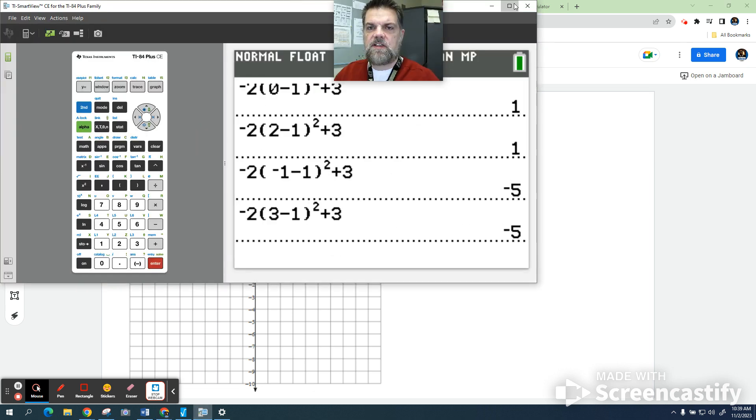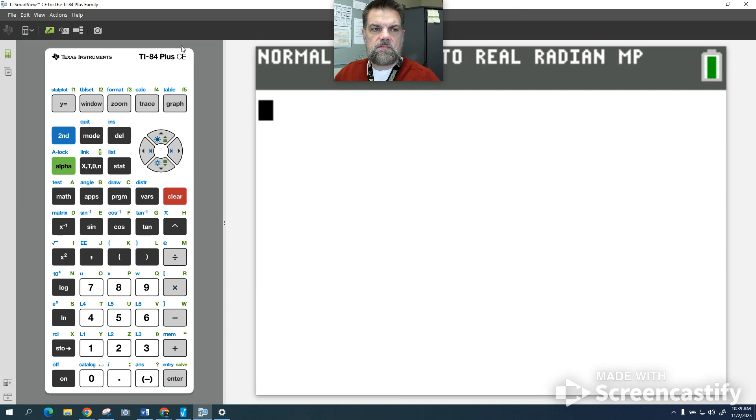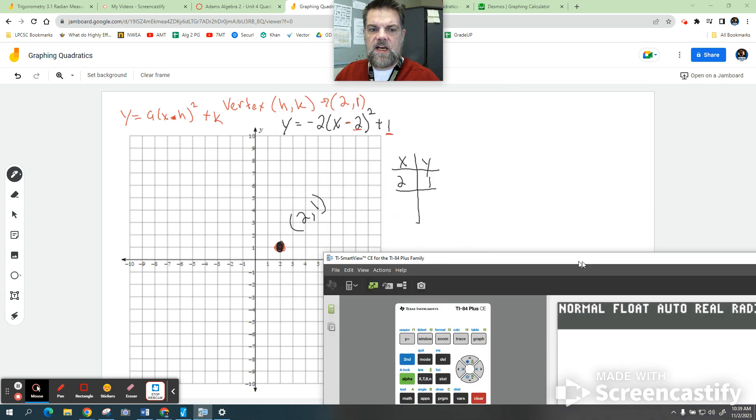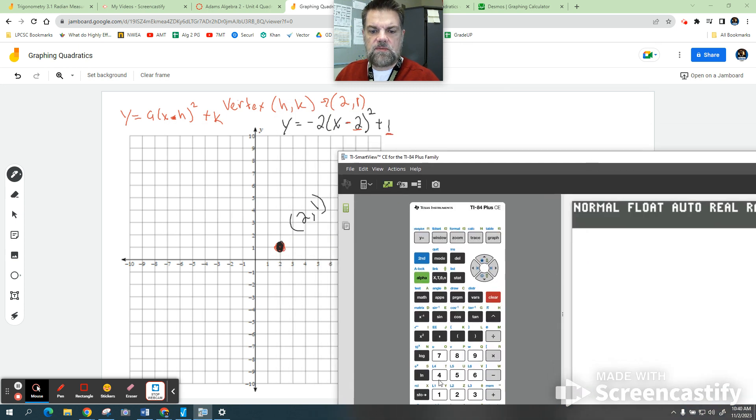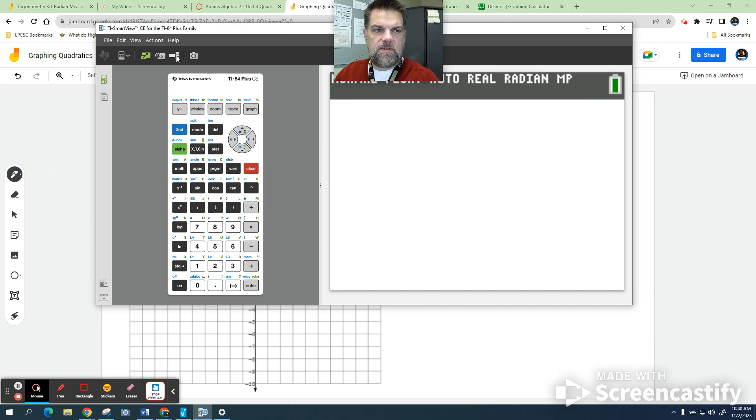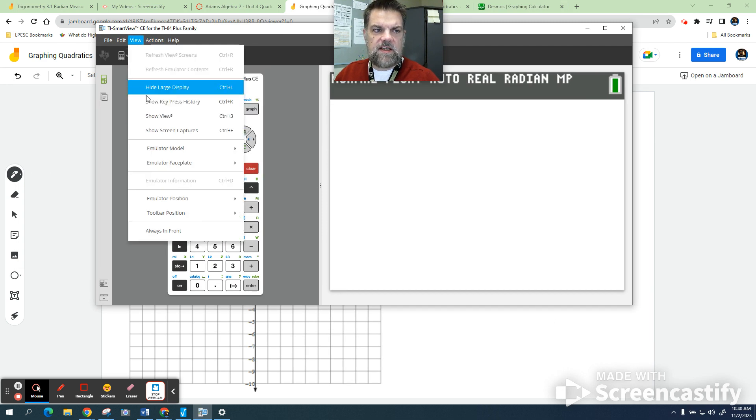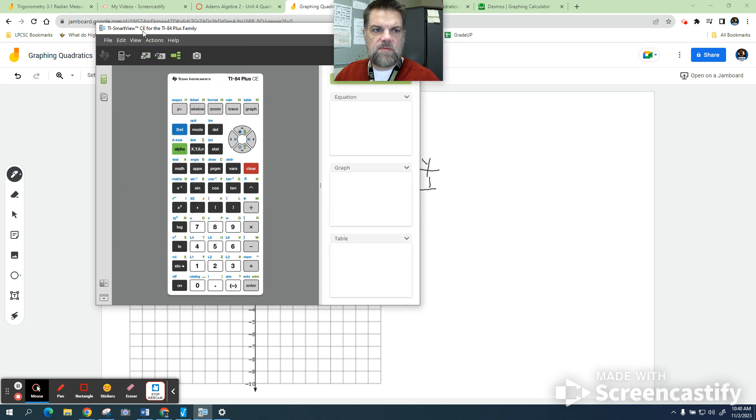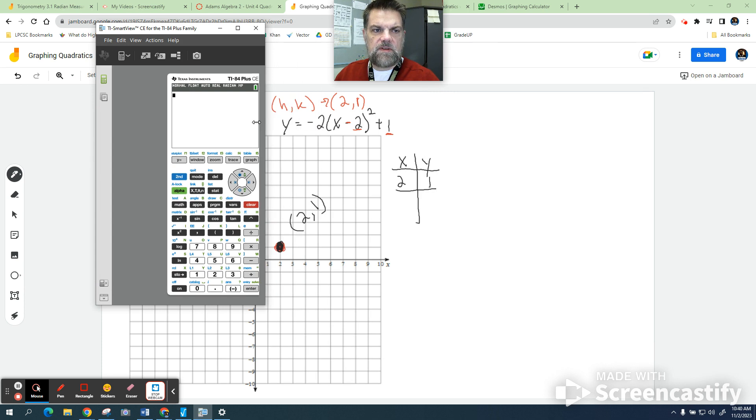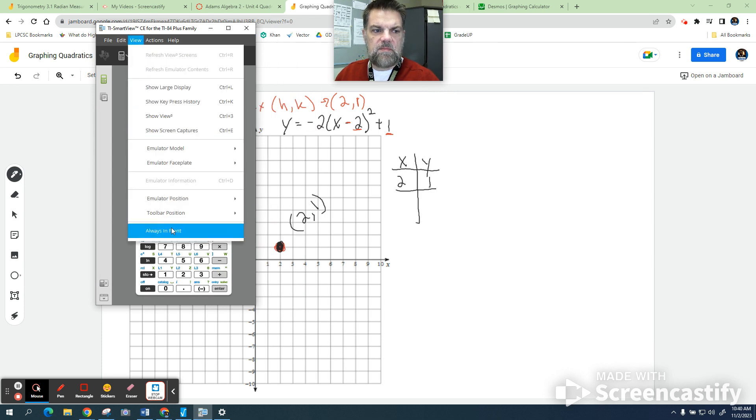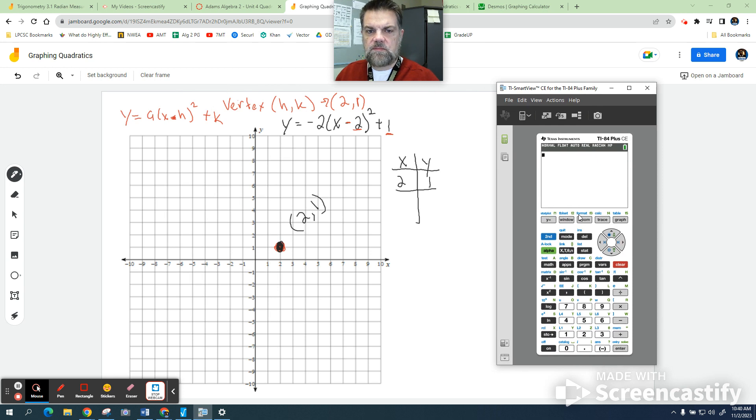Turn on your fancy calculator. All right. So my equation that I wrote down was negative 2. Here, let me do this little thing here, and then I'll make it big again in a second. So I'm going to put my little calculator here, and I'm going to say negative 2 times the quantity, but instead of x, I'm going to plug in 2, so I'm going to say 2 minus 2, close the parentheses, square it, plus 1.